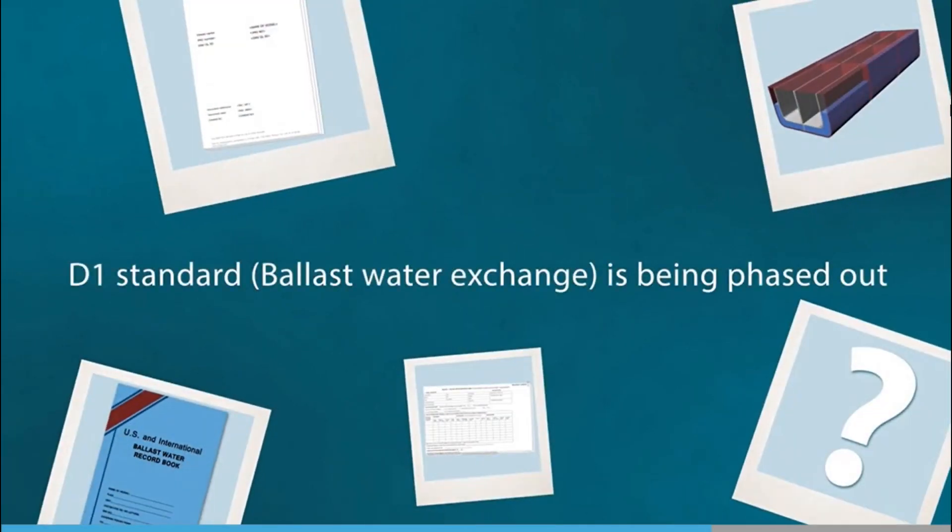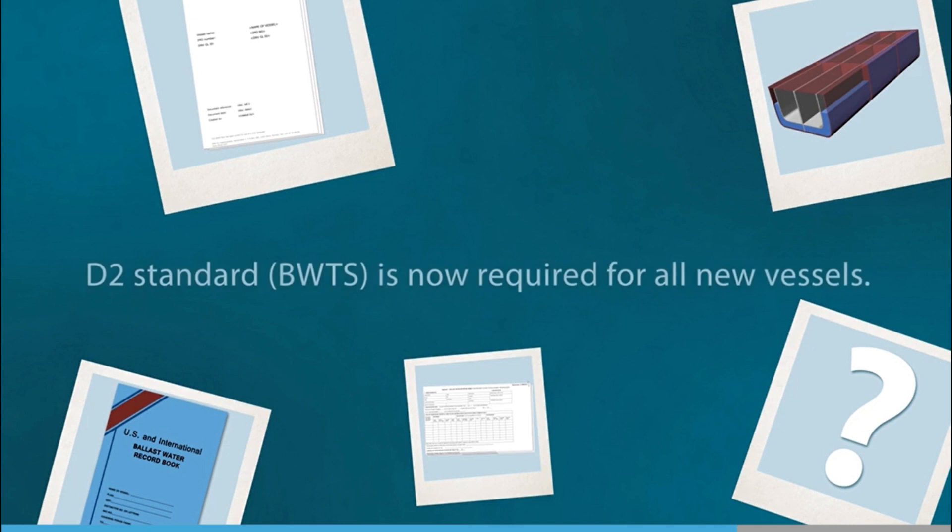Managing ballast water to the D1 standard using the exchange method is gradually being phased out as more approved ballast water treatment systems become available. The D2 standard using an approved ballast water treatment system is now required for all new vessels. The rules for when an existing vessel must have a ballast water treatment system have been subject to change and do differ between the U.S. Coast Guard's requirements and the IMO.